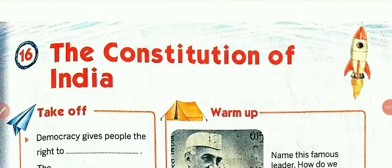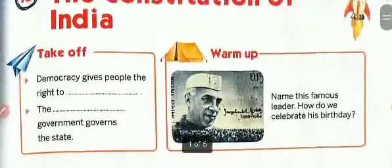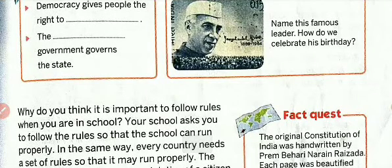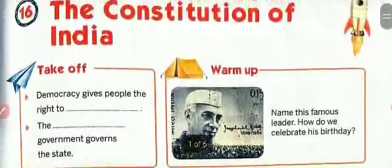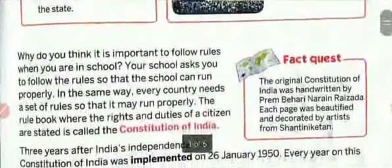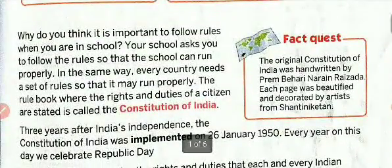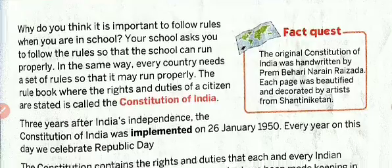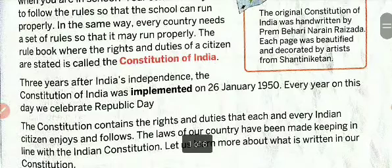The Constitution of India. In this chapter, we will be reading about the Preamble, the Fundamental Rights and Duties, and the Directive Principles. Why do you think it is important to follow rules when you are in school? Your school asks you to follow the rules so that the school can run properly. In the same way, every country needs a set of rules to run properly. The rulebook where the rights and duties of citizens are stated is called the Constitution of India.